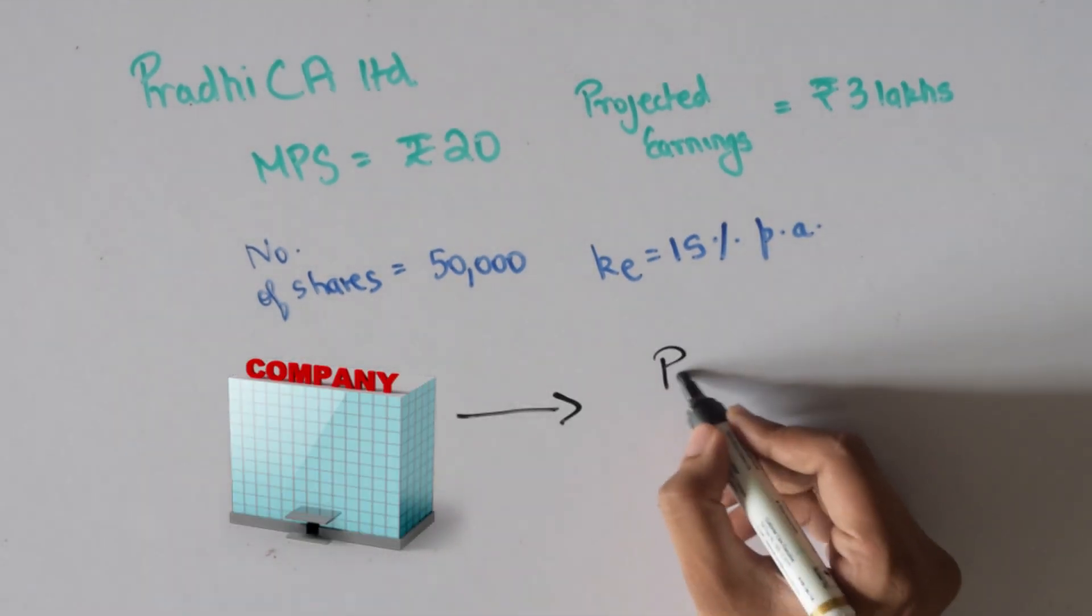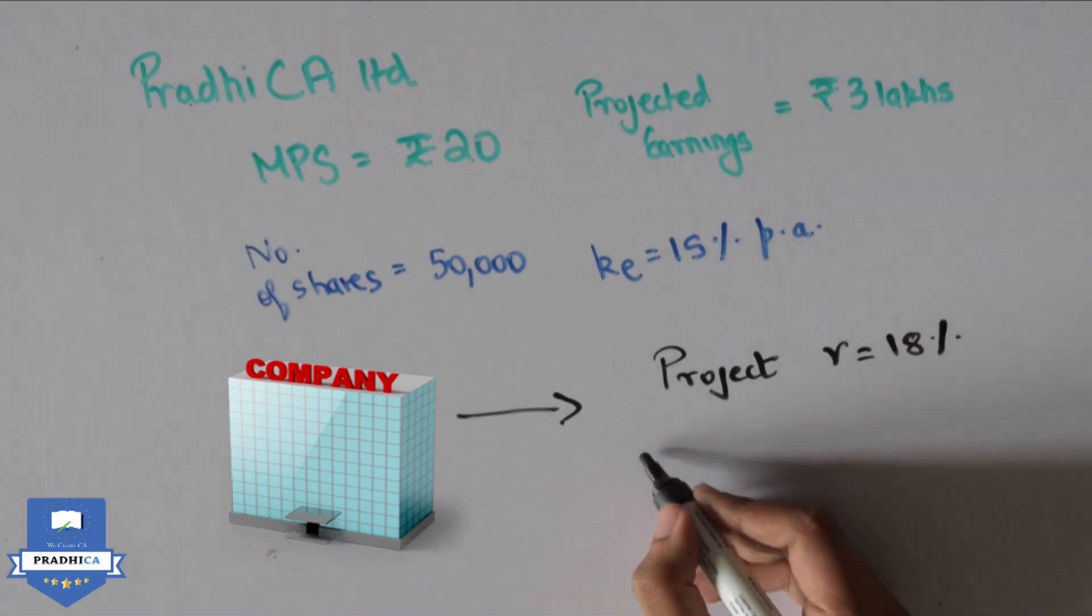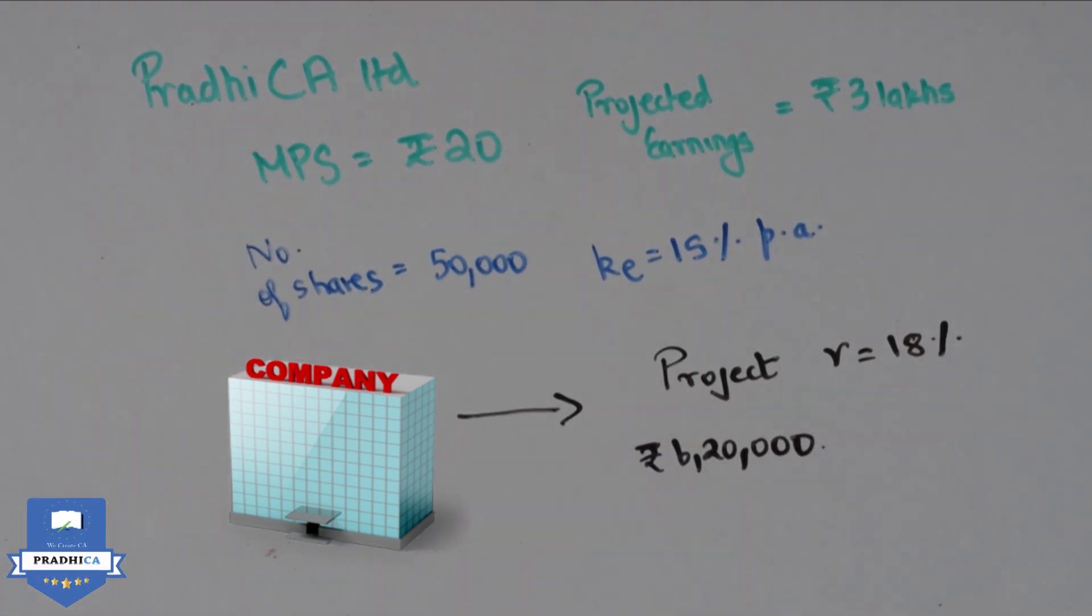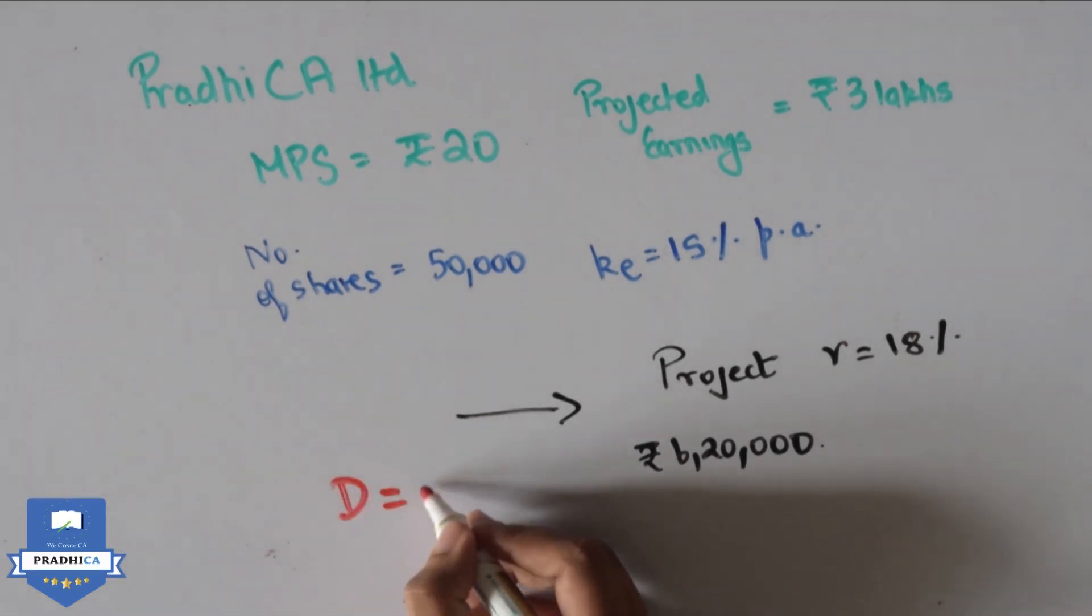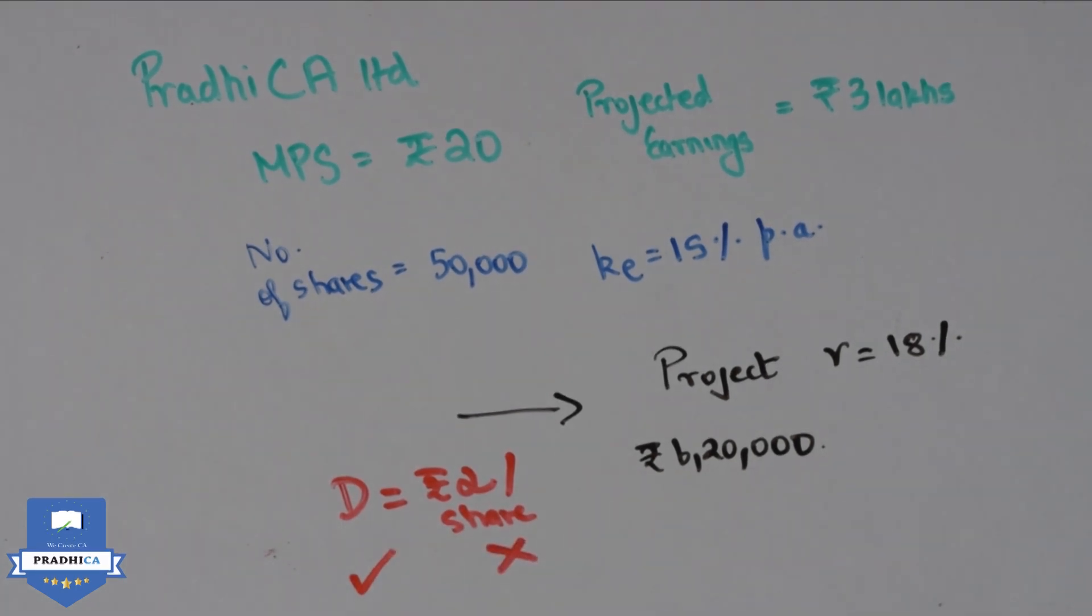The company has found a new project to invest in which gives a return of 18% and requires an investment of Rs 6,20,000. It is also contemplating whether to pay a dividend of Rs 2 or not. So how does the dividend impact the company? Let's see.